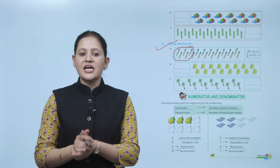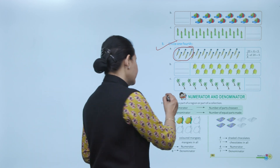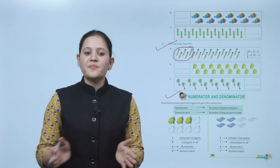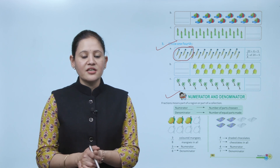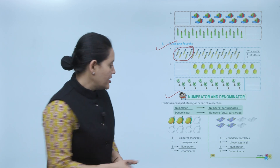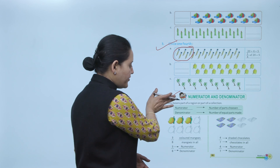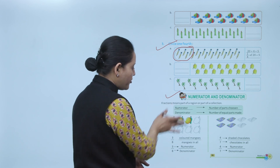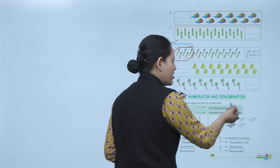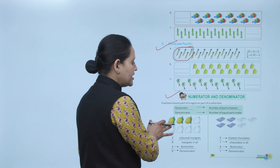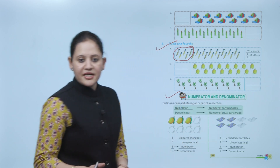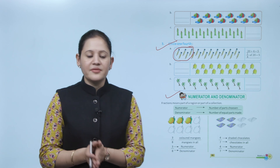Next is numerator and denominator. A fraction means part of a region or part of a collection, written as numerator upon denominator. The numerator is the upper part of the fraction and the denominator is the lower part. The numerator shows the number of parts chosen and the denominator shows the number of equal parts made.